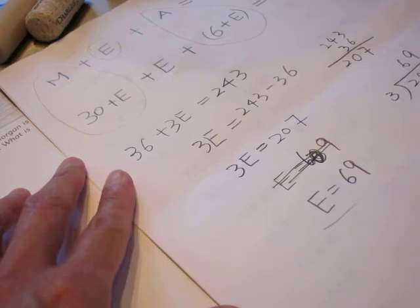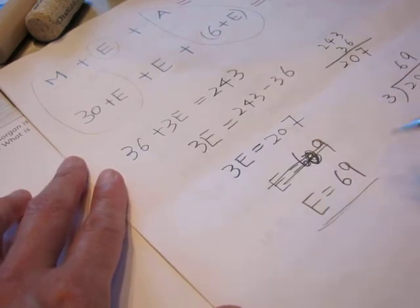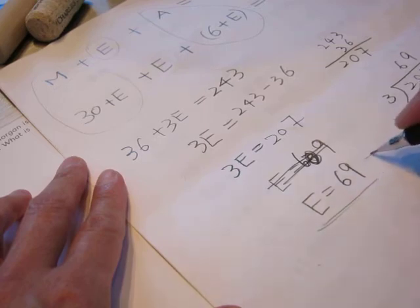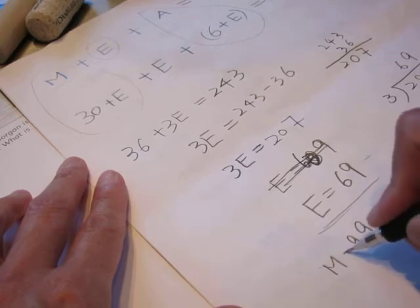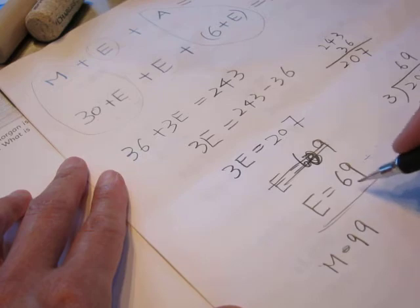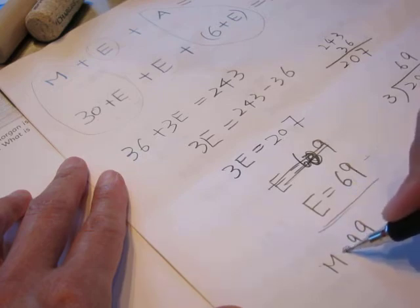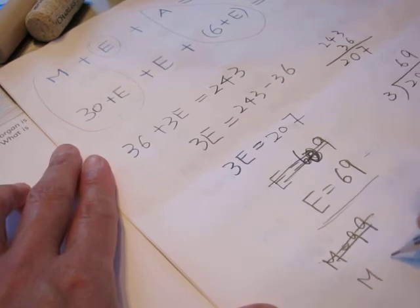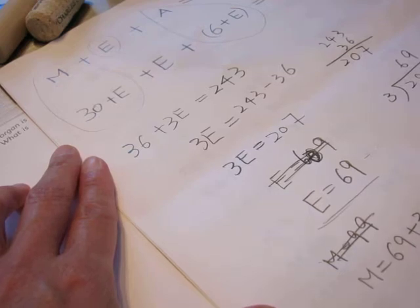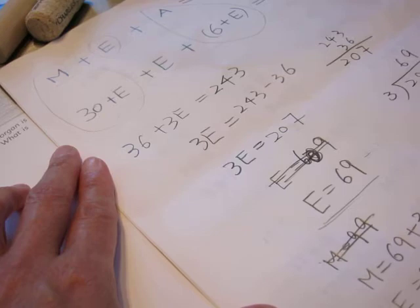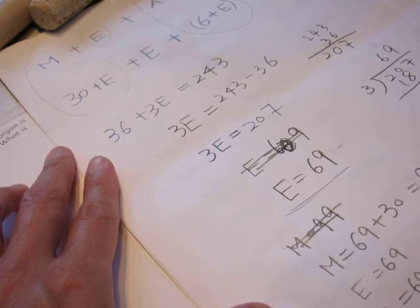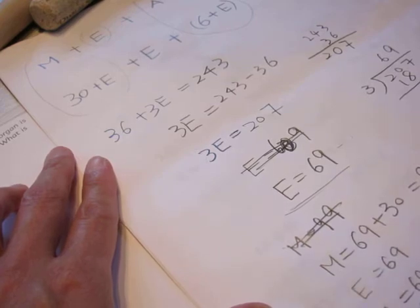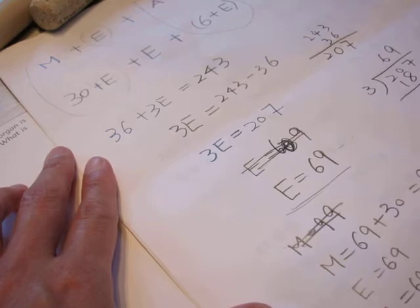So this is Emily's weight and what is Ashley's weight? The question is Ashley's weight, we can calculate everyone's weight, right? So this is Emily's weight and Morgan's weight is plus 30, so Morgan is 99, which is 69 plus 30. I will do it this way: Morgan equals 69 plus 30 equals 99 pounds. Emily 69 pounds. And Ashley is 6 pounds heavier than Emily, so it's 75 pounds, right?